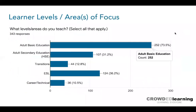So the survey results: this question was just to get a sense of who we're talking with. Three-quarters of you are ABE teachers, and about a third are either adult secondary education — high school equivalency — or ESL teachers. A handful are transitions instructors, and a large handful — 44 and then 36 of you — were career and technical instructors.